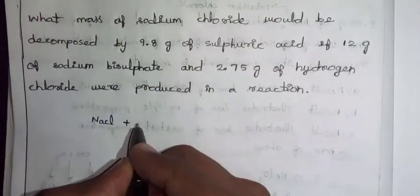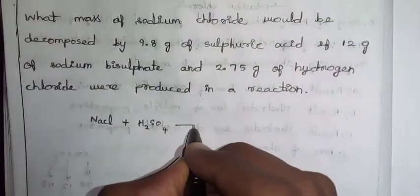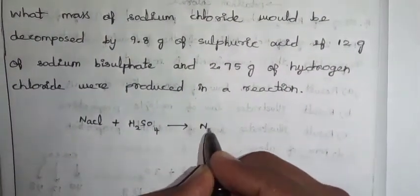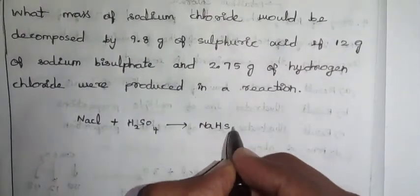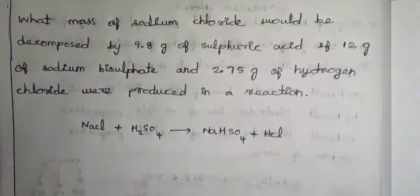NaCl reacting with sulfuric acid produces sodium bisulfate, NaHSO4, and hydrogen chloride, HCl. This is a general reaction.